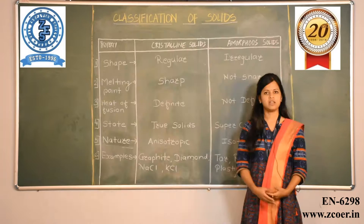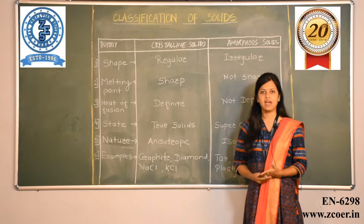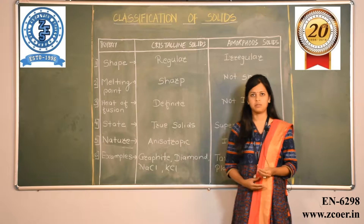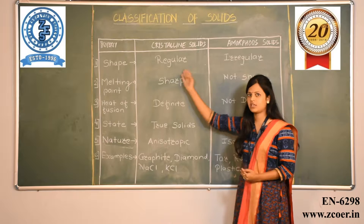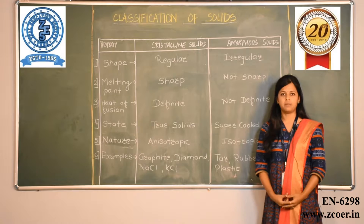Let us look at the differences between crystalline solids and amorphous solids. First, shape: crystalline solids have a regular shape, whereas amorphous solids have an irregular shape. Second, melting point: crystalline solids have a very sharp melting point due to their regular structure and melt completely at a particular temperature, whereas amorphous solids do not have a sharp melting point — they melt over a range of temperatures.